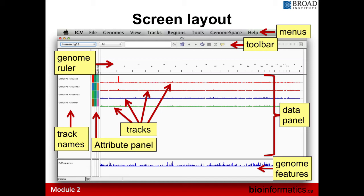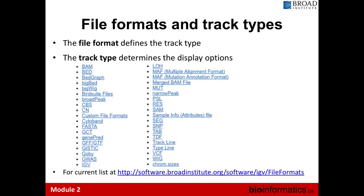IGV's advantage is being pre-configured to handle different data types. You simply load files with the appropriate extensions and it knows how to process and view your data optimally. Each data type must follow IGV's expected input format, but once it's in the right format, IGV takes care of everything else. All format information is available on the Broad website — check the file format before loading anything, because if your extension doesn't match the file, IGV will throw an error.